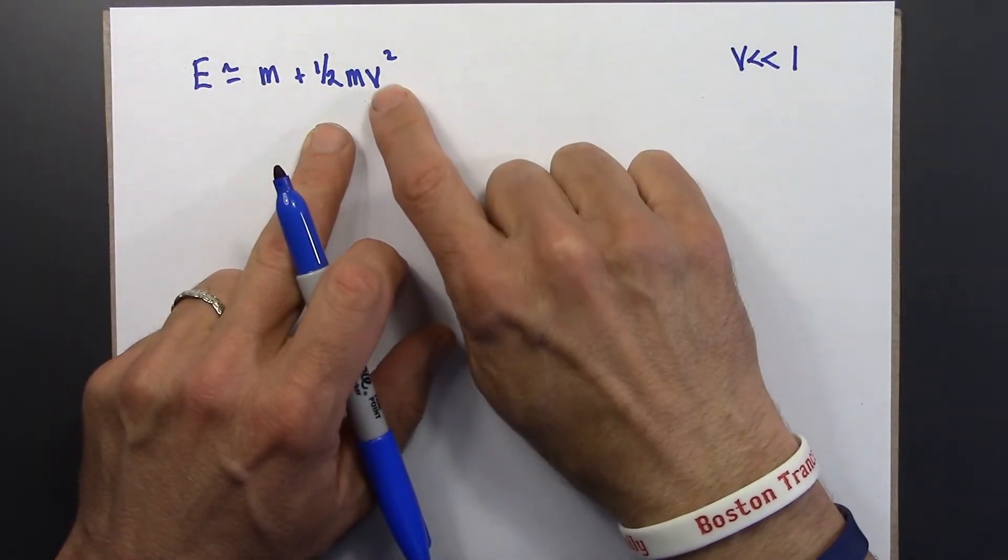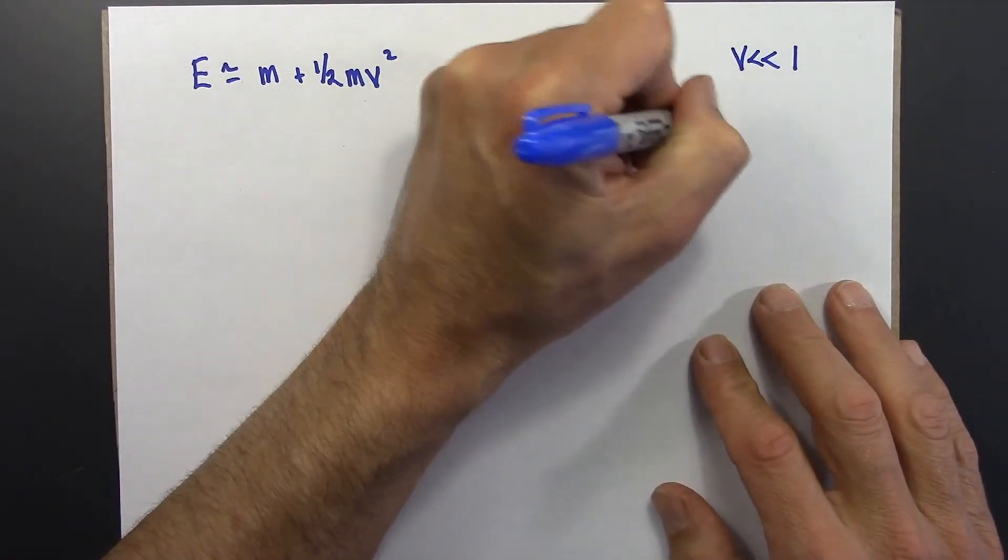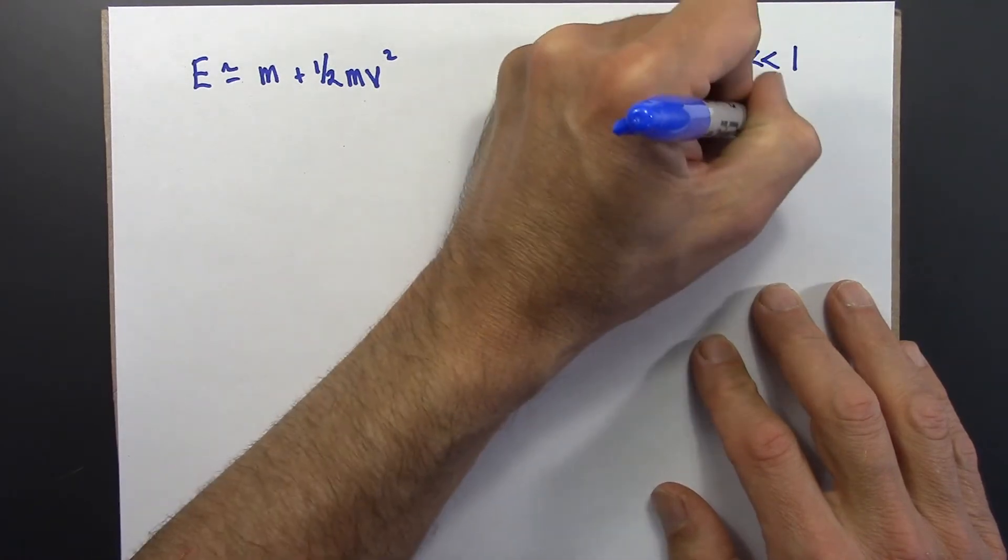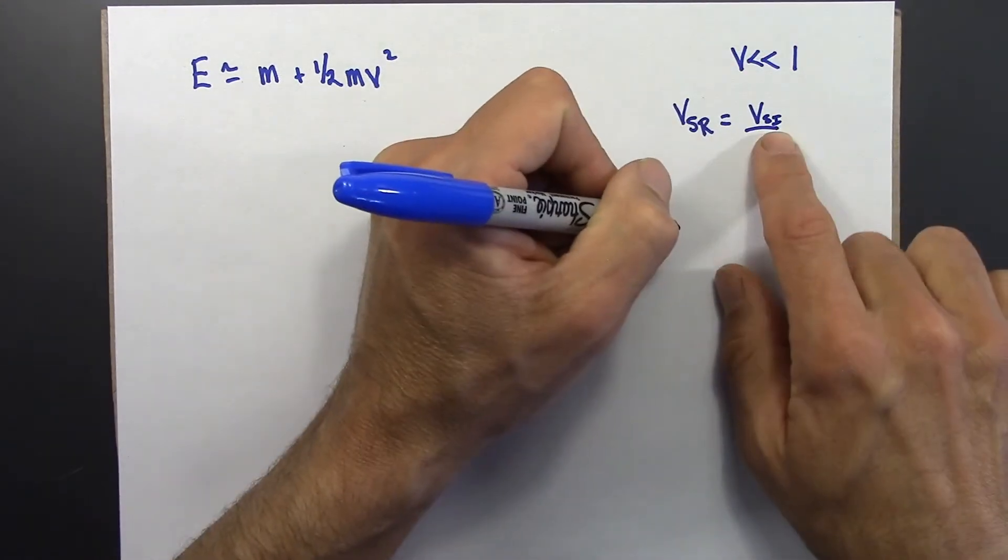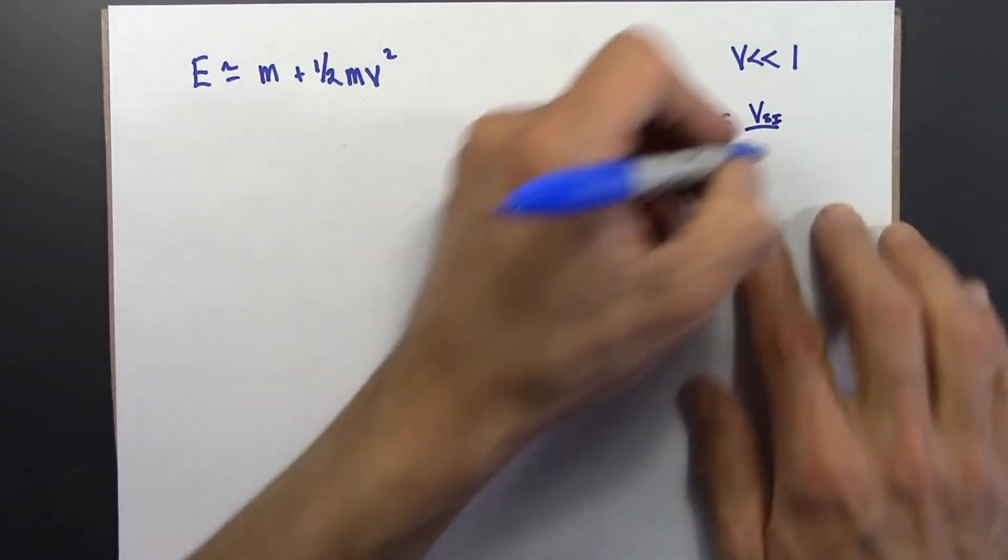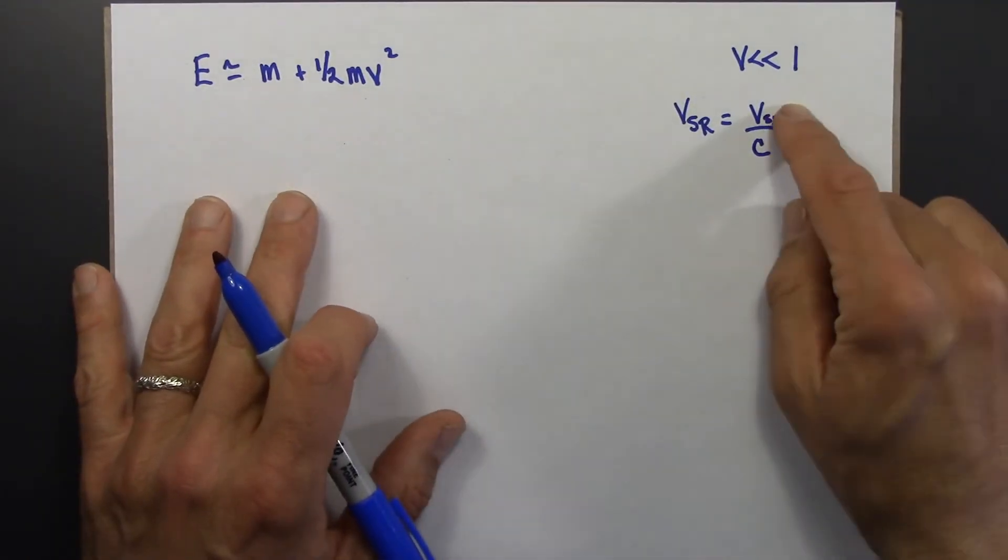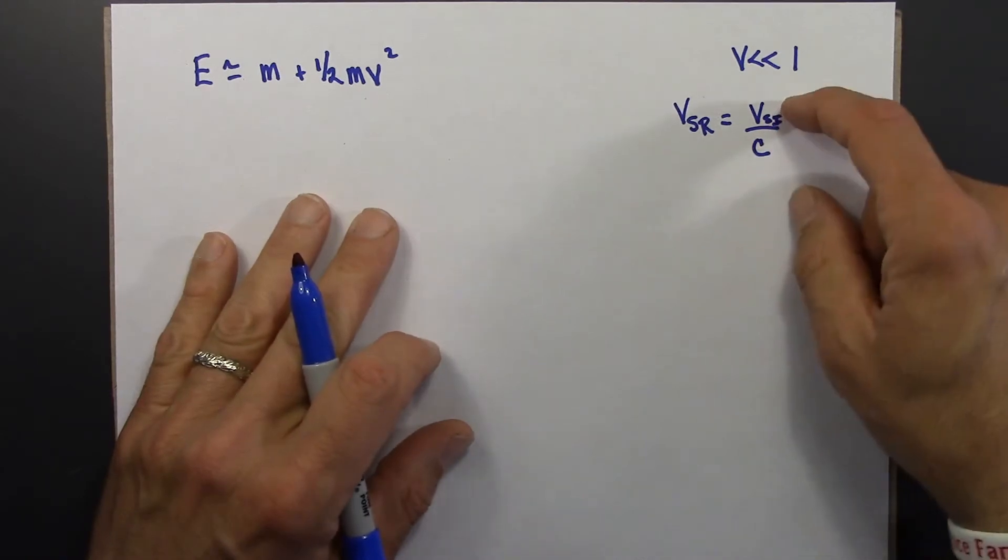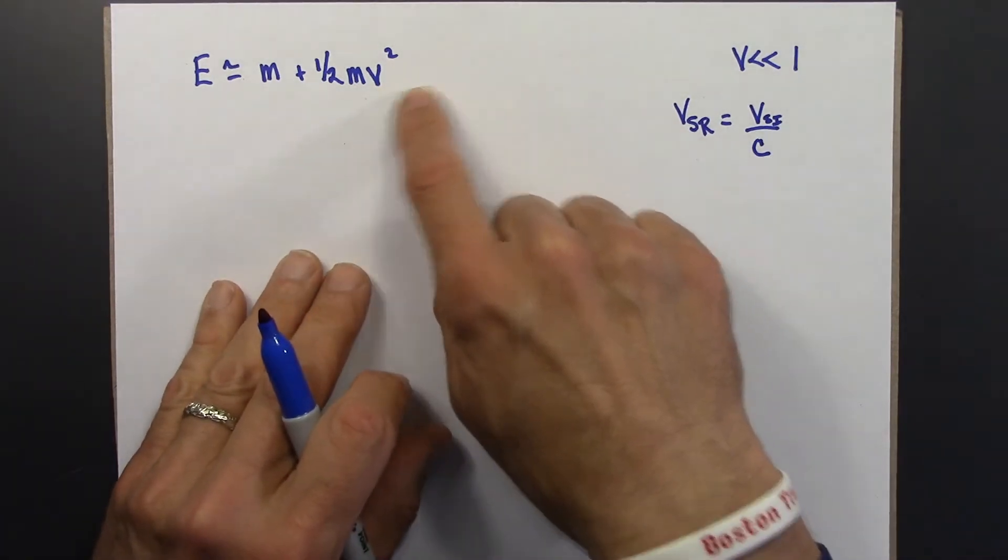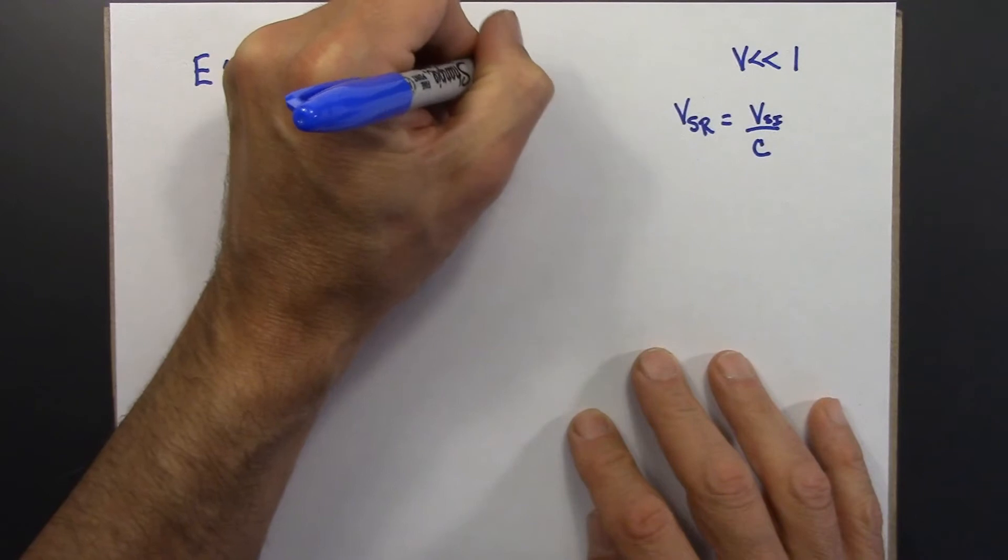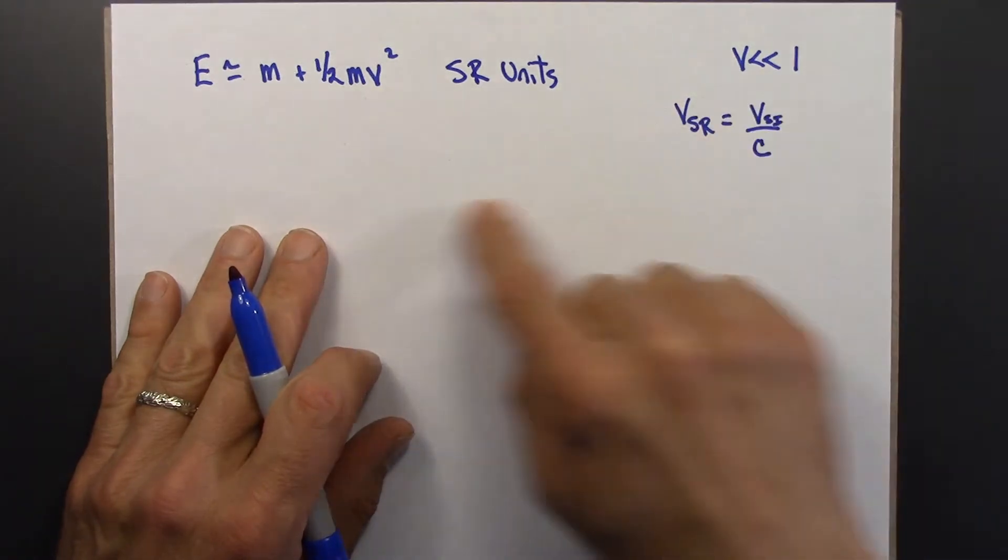So what that means is that v is measured as a fraction of the speed of light. So just as a reminder, v SR is v SI for Systeme Internationale, or just sort of non-SR. And you've done this calculation a lot. You're given a speed, Beowulf's going at 300 kilometers per second, and you'd convert and divide by C to get that into SR units. Okay, so a reminder that this is SR units. So v is just a number, it's a fraction of the speed of light.